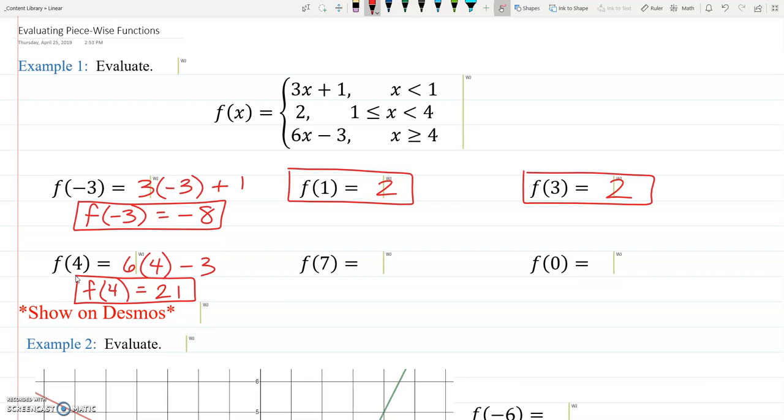Alright. I know I'm going quick, but I think we're doing okay. I'm just going to keep moving. F of 7. 7 fits in with this bottom one where 7 is greater than or equal to 4. So I'm going to use this bottom piece. So 6 times 7 minus 3. F of 7 equals 42 minus 3. So F of 7 equals 39.